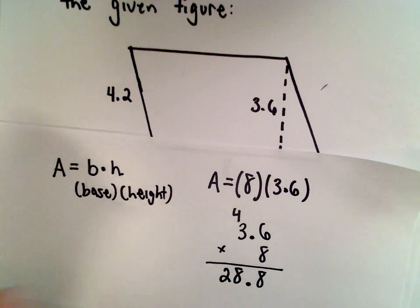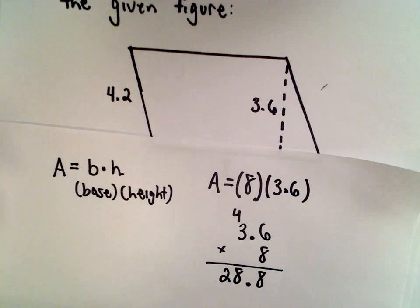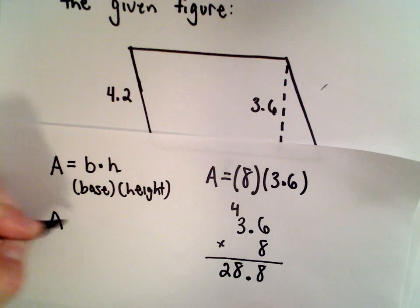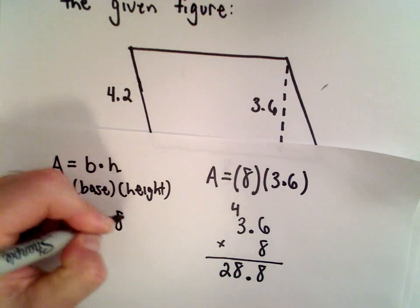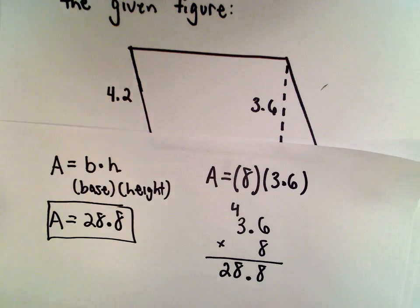And we're going to get an area of 28.8 units. So not too terrible. Again, just formulas to know.